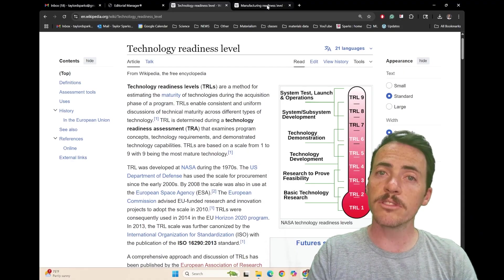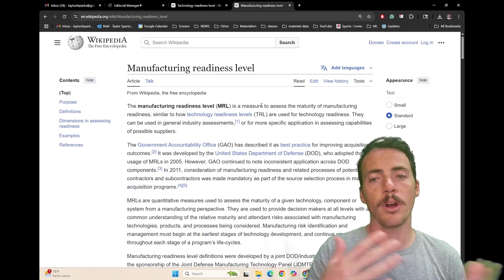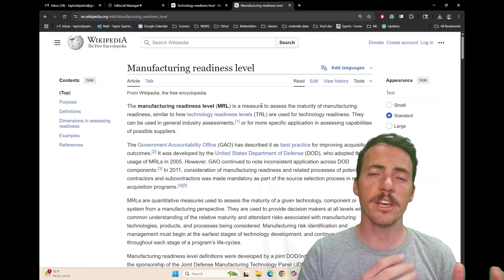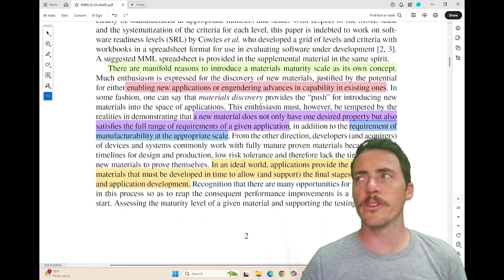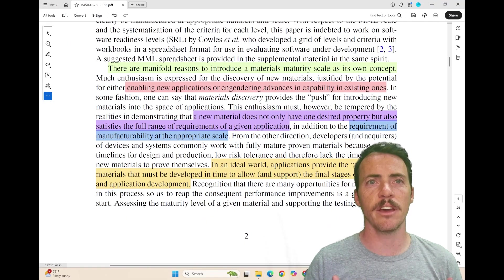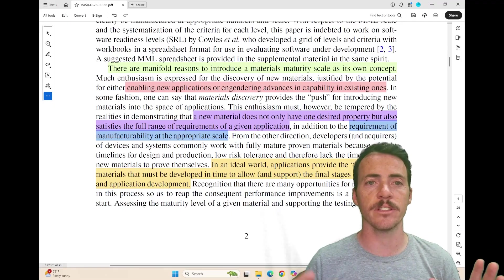And you've probably also heard of manufacturing readiness level, which basically tells you it's a similar process, but for how we manufacture things. Well, materials maturity level is sitting somewhere in between these two. The authors point out that there's a number of reasons why you'd want a specific materials maturity scale as its own concept, apart from the TRL and the MRLs, which are fantastic.